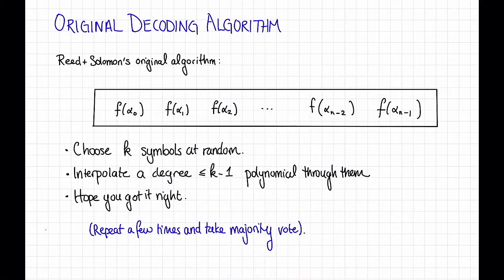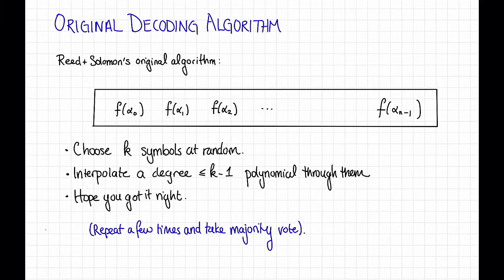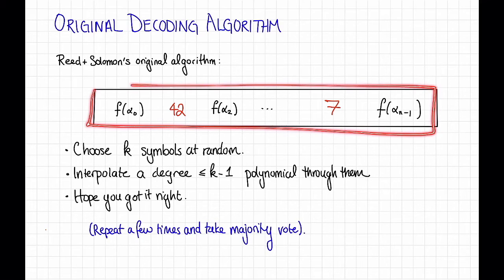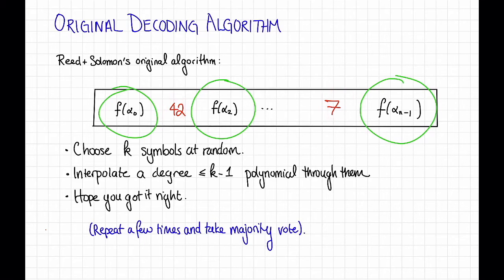Here's Reed and Solomon's original decoding algorithm: say we have a codeword, which consists of evaluations of some low-degree polynomial f, and then some of those evaluations get messed up — for example, one was supposed to be f of alpha n minus 2, but someone changed it to something else. So we have a corrupted codeword with some errors. The algorithm: choose k symbols at random, interpolate a degree k minus 1 polynomial through them, and hope we avoided all the bad symbols. If we did, we get it right; if we hit a bad symbol, we might get it wrong. Repeat a few times and take a majority vote. This works okay if there are very few errors, but it won't get us all the way up to decoding up to (distance minus 1) over 2, which is what we'd hope for.